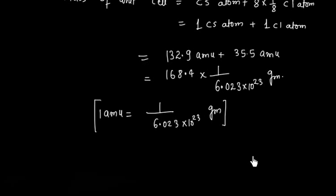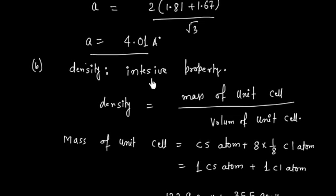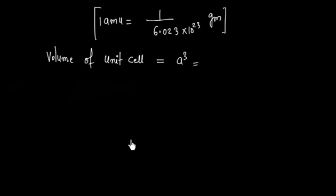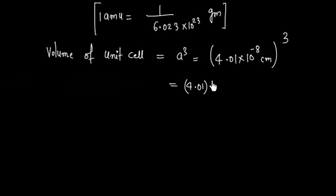Now let us calculate the volume of the unit cell. Volume is simply a³. We know the edge length is 4.01 Å, which equals 4.01 × 10⁻⁸ cm. So the volume is (4.01 × 10⁻⁸)³ = 4.01³ × 10⁻²⁴ cm³. From here we can calculate the density.